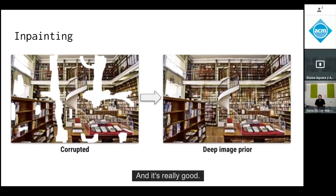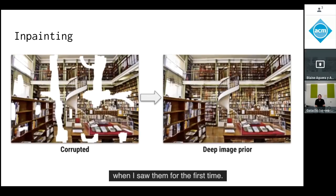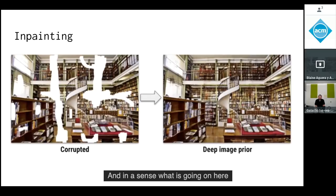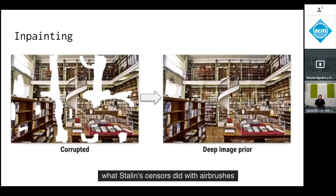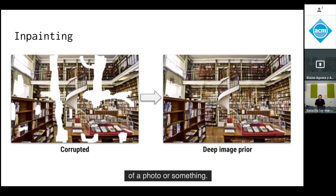The results are really stunning. What's happening here is something very similar to what Stalin's censors did with airbrushes — airbrushing Trotsky out of a photo. You razor out or spray-paint out part of an image, and an artist has to imagine what goes in the hole.